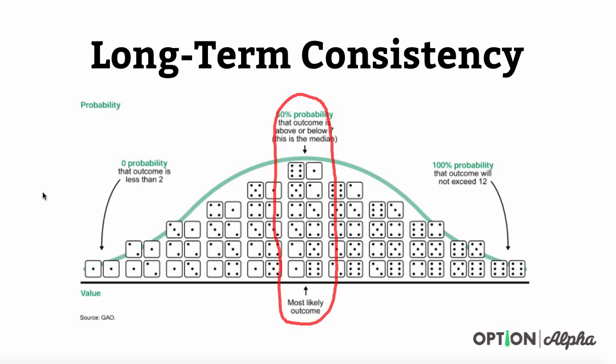The number seven is the highest chance of happening every time that you throw dice because there's many different combinations that could create seven. You could have one and six, you could have two and five and four and three, et cetera.